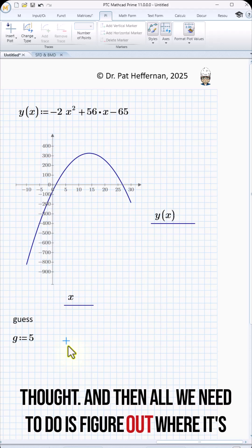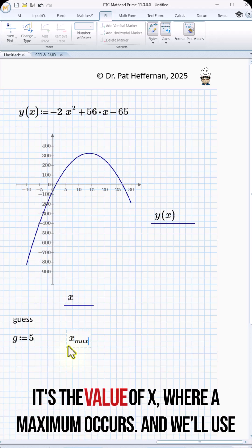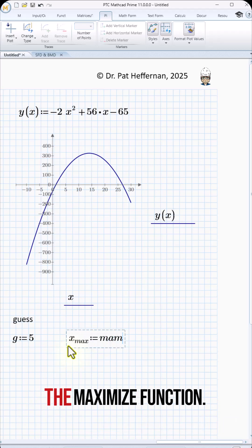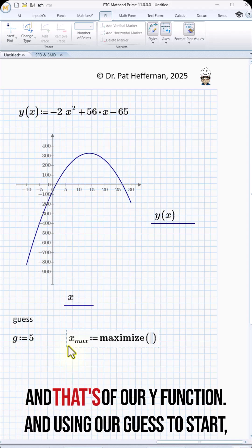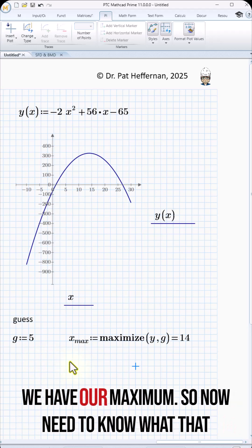And then all we need to do is figure out where it's going to occur. So that's going to be at some value, and we'll say it's the value of x where a maximum occurs, and we'll use the maximize function. And that's of our y function and using our guess to start, and it comes up with an answer and tells us that at x equals 14, we have our maximum.